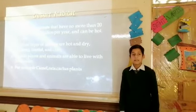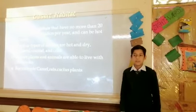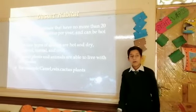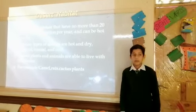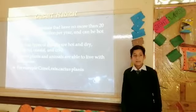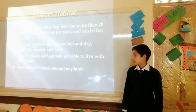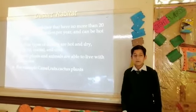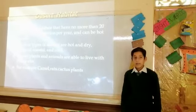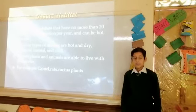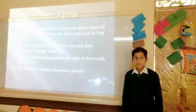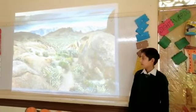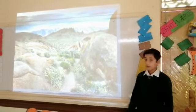Deserts are a habitat that have no more than 20 inches of precipitation per year and can be hot or dry. The four types of deserts are hot and dry, semi-arid, coastal, and cold. Desert plants and animals are able to live with little water. For example, camels, rats, and cactus plants.